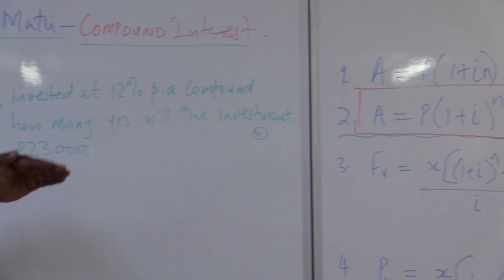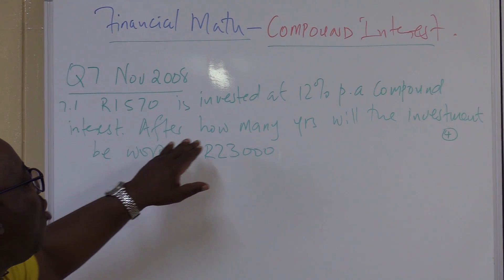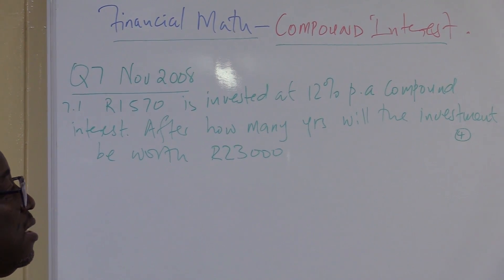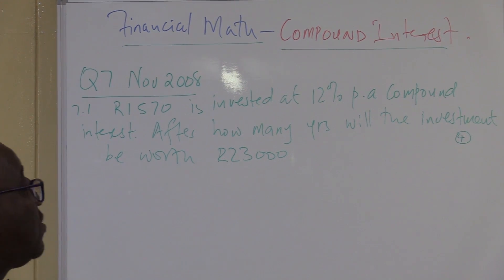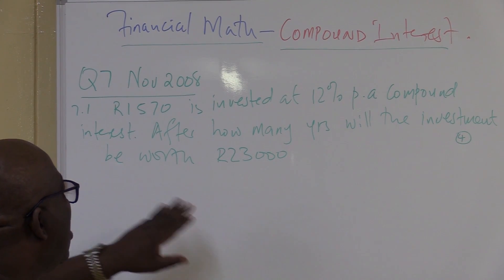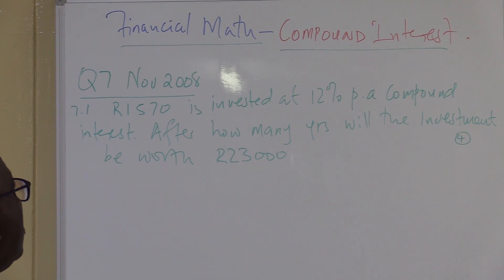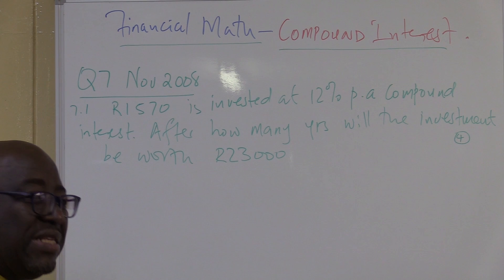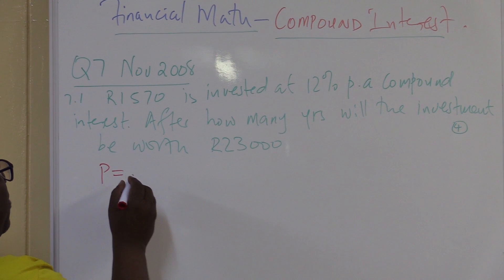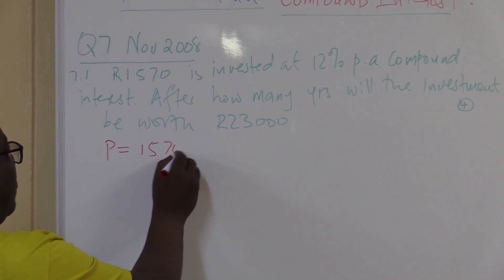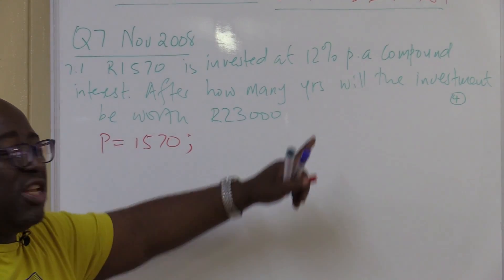R1,570 is invested at 12% per annum compound interest — after how many years? This one is asking for n, and n is the exponent, so you know that logarithms are involved. After how many years will the investment be worth R23,000? Let us collect our data. R1,500 — it is invested, it's the one we put into the bank, so it is P. P is equal to 1,570.